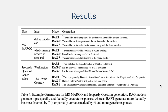Comparing BART with RAG, these examples from the MS-MARCO task or the Jeopardy question generation task show differences in generation quality. In the Washington example, BART says this state has the largest number of counties in the US, which isn't actually true, whereas RAG produces true statements because it retrieves context and uses it to generate the answer. These examples demonstrate the factual improvement of retrieval augmented generation over plain BART.